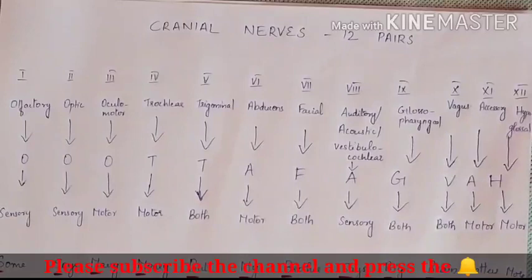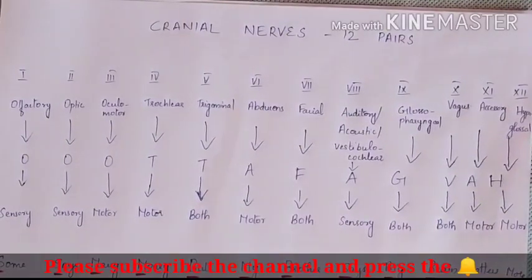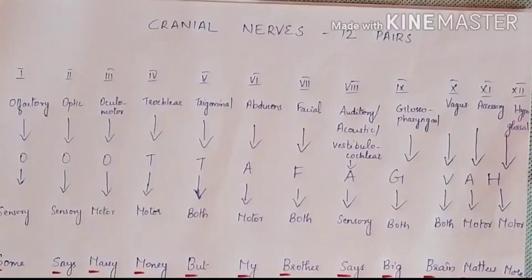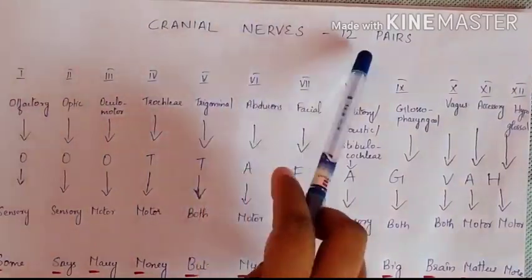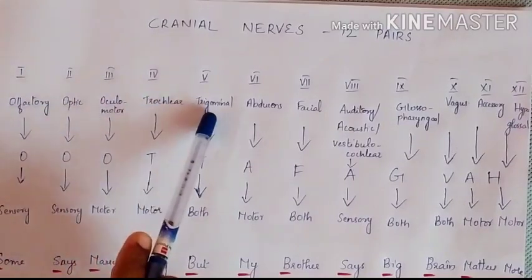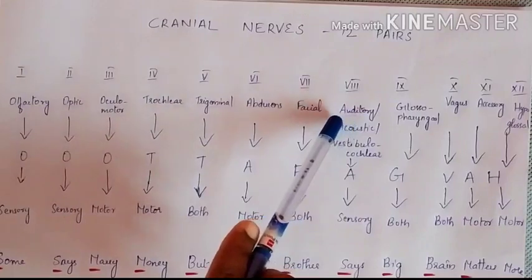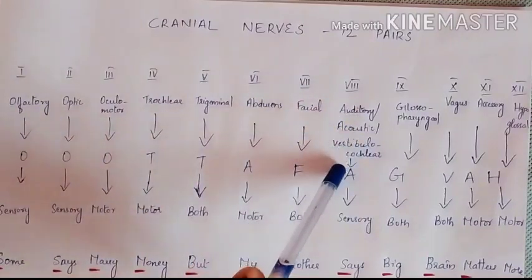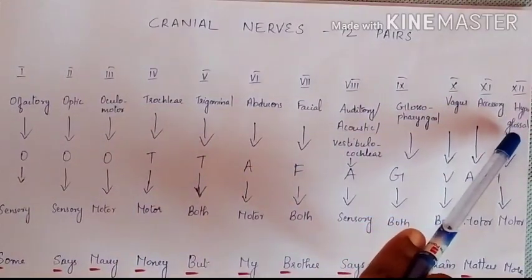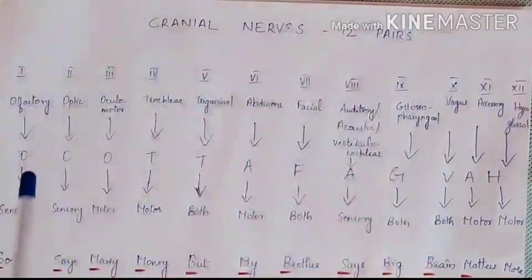Welcome to Doodyear Academy. In this video I am going to discuss the cranial nerves, the shortcuts to remember them, and the peculiarities of each cranial nerve. There are 12 pairs of cranial nerves: olfactory, optic, oculomotor, trochlear, trigeminal, abducens, facial, auditory (acoustic or vestibular cochlear), glossopharyngeal, vagus, accessory, and hypoglossal.